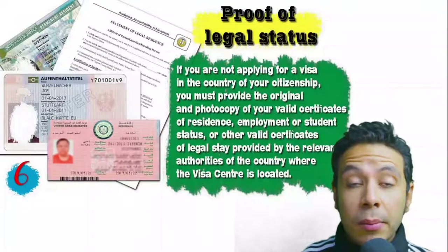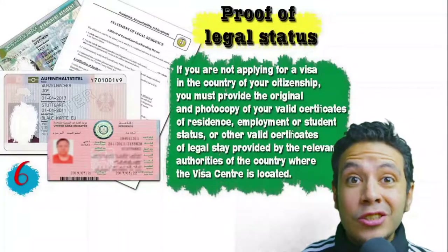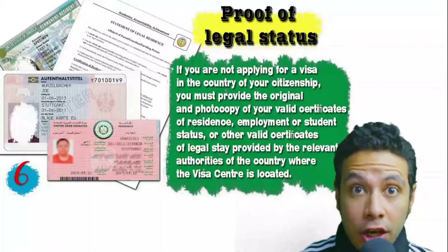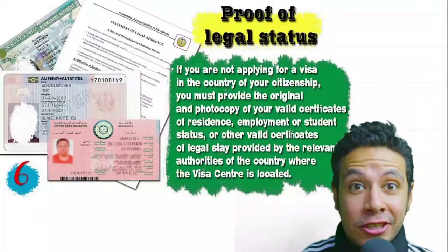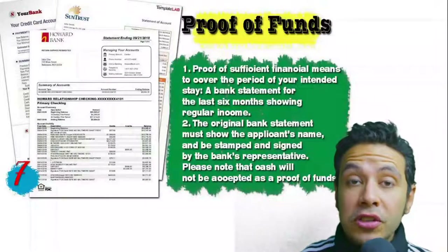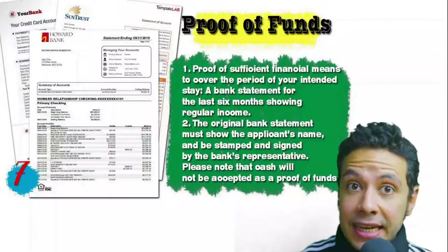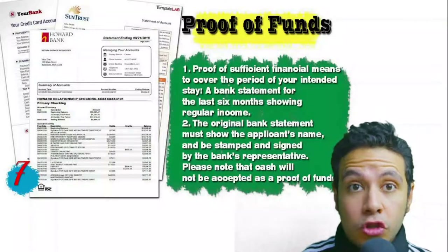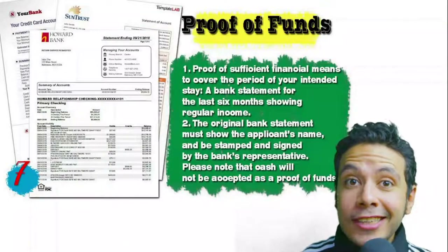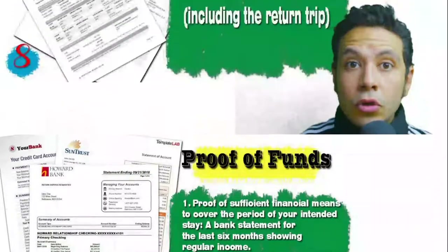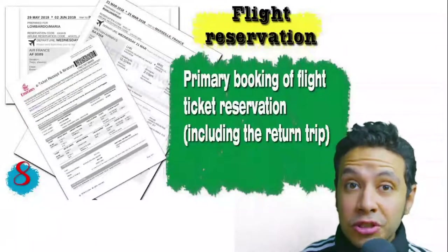If you are applying from a country different than your own, you will need a certificate of legal residence or a valid residence visa for that country. You will also need to provide proof of sufficient funds — a bank statement showing your balance for at least six months. The original bank statement must show your name and be signed and stamped by the bank. Remember, cash will not be accepted as proof of funds.